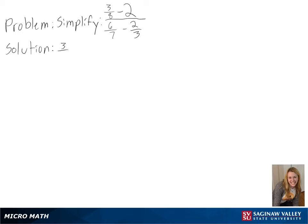Our problem is to simplify 3 eighths minus 2 over 6 sevenths minus 2 thirds.